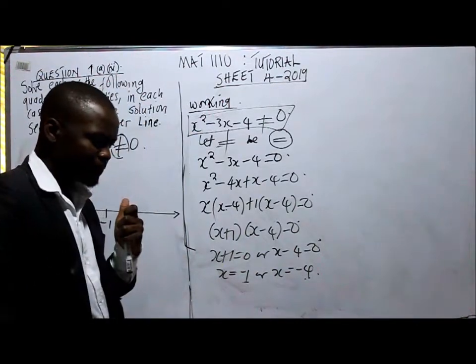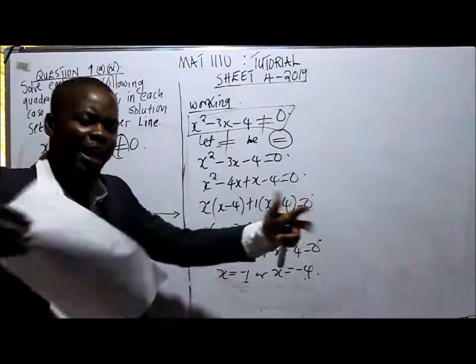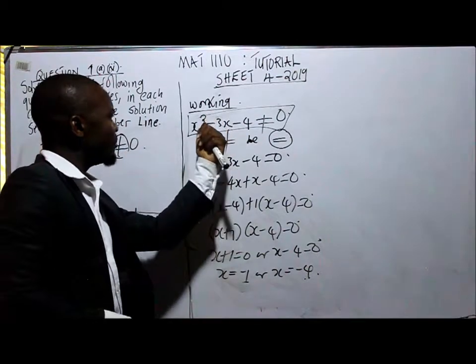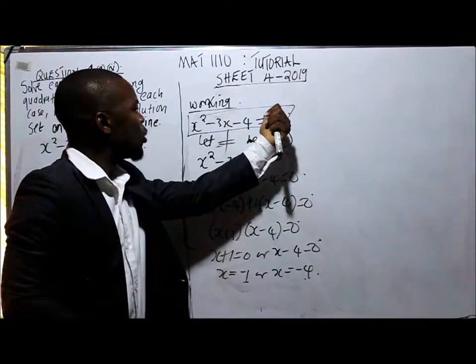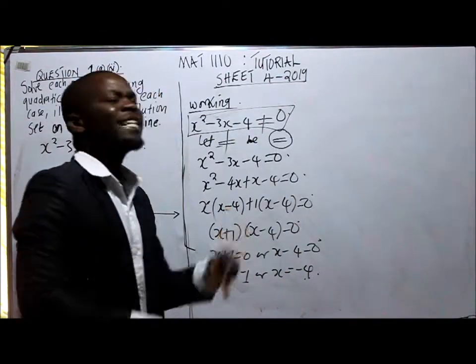This equation is saying, I am accepting any value of x except those numbers when you put them in this inequality and they're giving you 0. So numbers when you put them in this inequality and they're giving you any number apart from 0, those are the values of x which this equation is accepting.